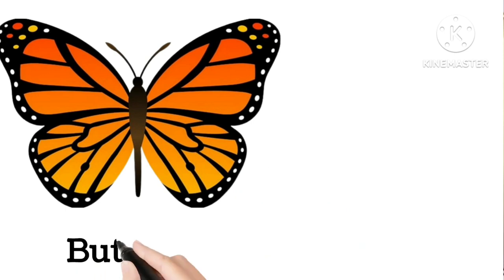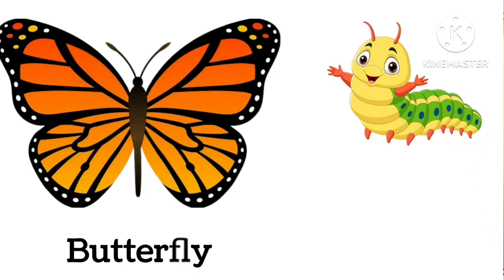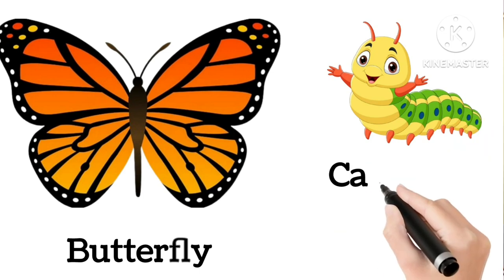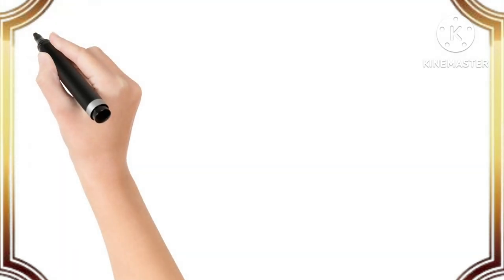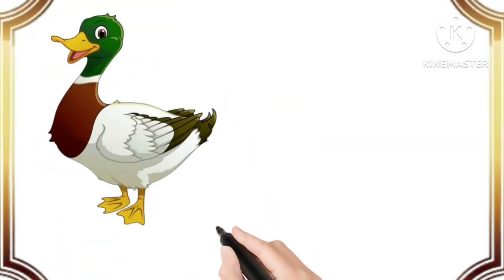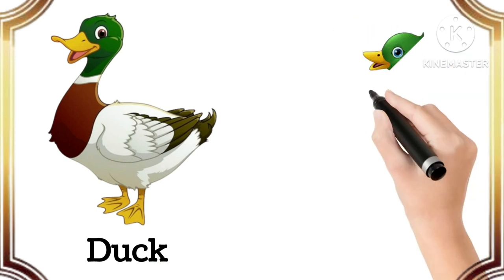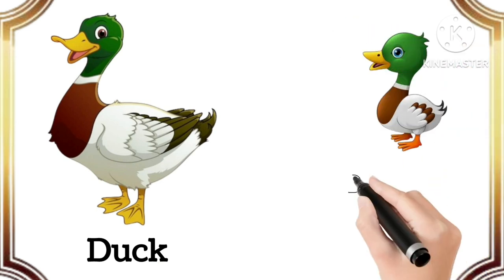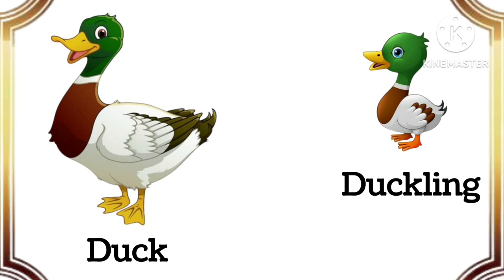Butterfly. The baby of butterfly is caterpillar. Caterpillar. Duck. The baby of duck is duckling. Duckling.